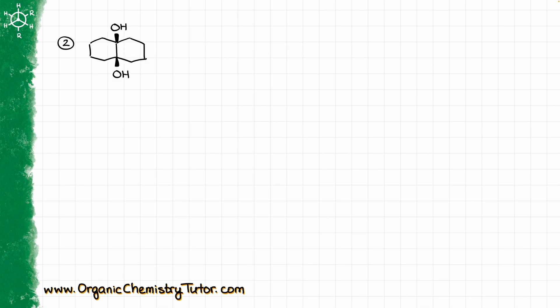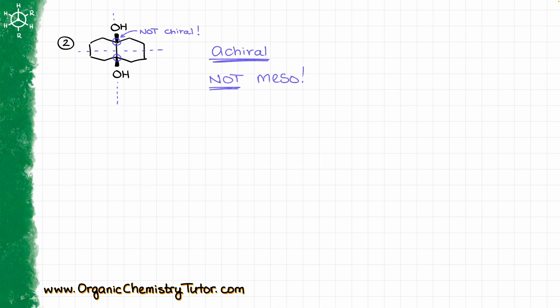Now my next example might seem very similar to the first one. We do have a plane of symmetry cutting through our molecule horizontally, and we also have another plane of symmetry cutting through our molecule vertically. But because of that vertical plane of symmetry, our carbons bearing oxygens in the middle are not chiral carbons. And because those carbons are not chiral, this molecule, although it is symmetrical, does not have any chiral atoms. Because of that, it is a simple achiral molecule and it is not a meso compound.